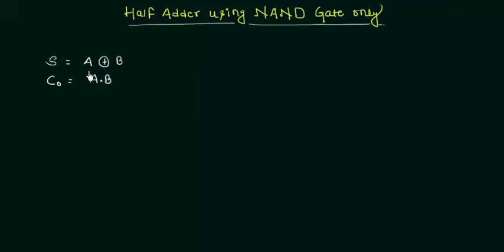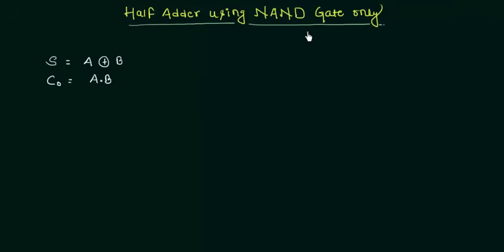If you want to implement it using the XOR gate, it's very simple — the sum is A XOR B using a single XOR gate, and the carry output is A AND B using a single AND gate. But now we want to implement it using the NAND gate only.